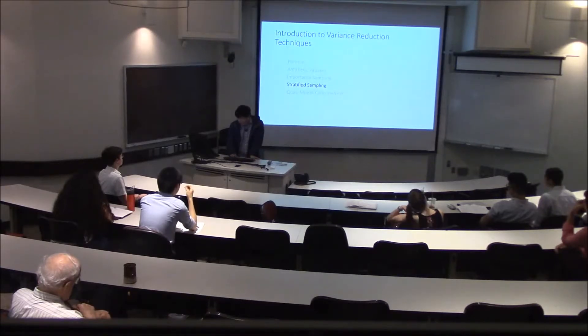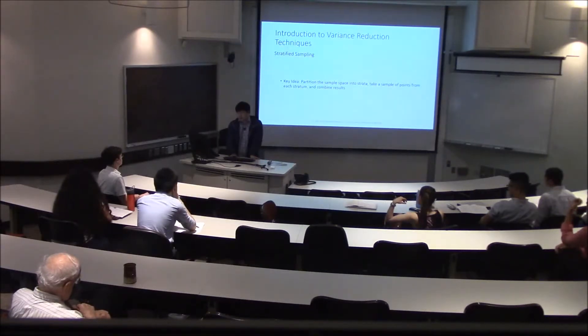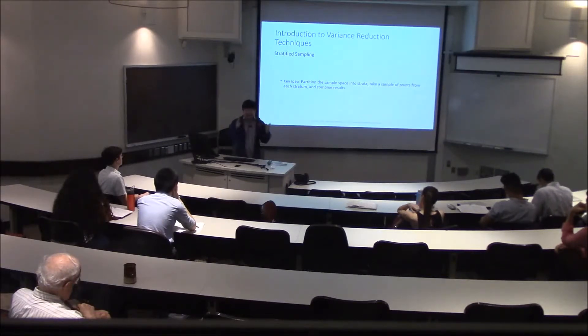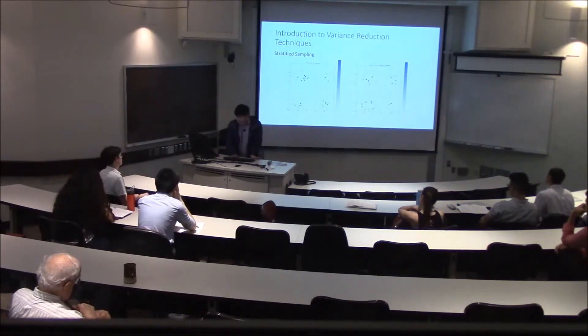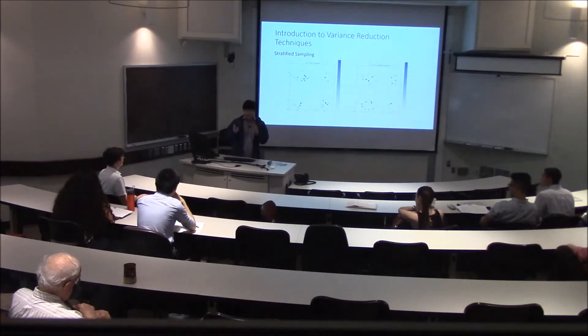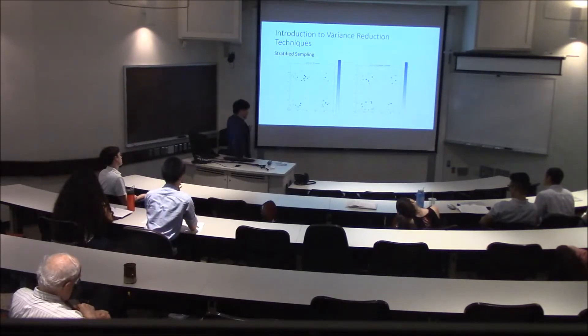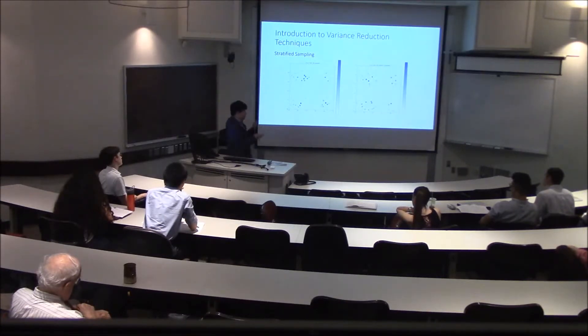The third one is stratified sampling. Essentially we want to divide up the sample space into different sub-regions and then combine the results from each region. This works because we're reducing the variance within each local sub-region. This solves an issue known as sample clumping. If we're pulling from a random distribution we can face an issue where samples can be clustered or clumped near each other, leaving empty areas. If we subdivide the area into 25 squares with four samples each, we can see that it's a lot more spread out.